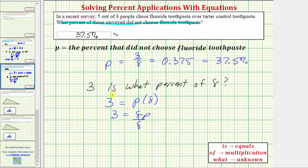To solve for p, we divide both sides by eight. Simplifying on the right, we have one p or p. Notice on the left we have three-eighths. So here we have p equals three-eighths, which we had originally up here, which we already know equals thirty-seven point five percent.